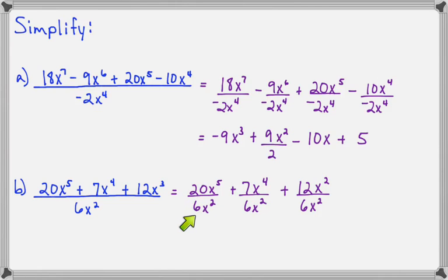20 divided by 6 is not going to make a whole number. But, 2 will go into each of these numbers. So, that's going to leave us 10 over 3. And, x to the 5th divided by x to the 2nd is x to the 3rd. So, we'll have 10x to the 3rd over 3.